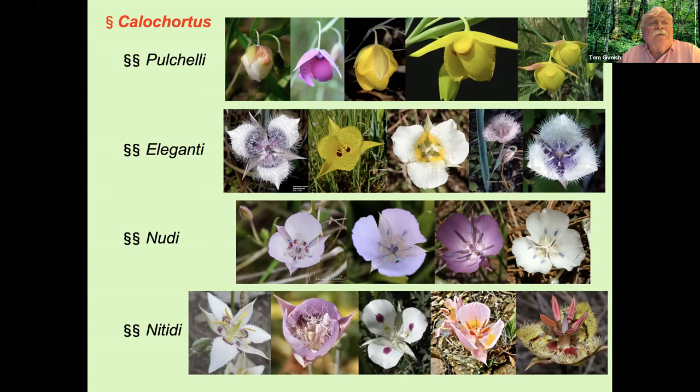Subsection Nuttallii is marked by erect capsules and petals with long sparse hairs or dense shorter hairs, and includes such western species as Lyallii, Longibarbatus, Eurycarpus, Persistens, and Tiburonensis, and a group of four closely related species on serpentine outcrops from the Siskiyous.